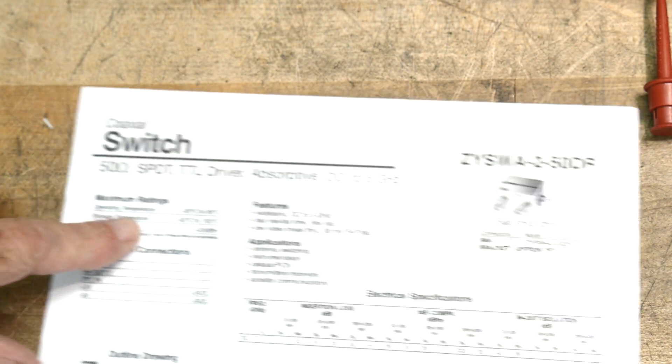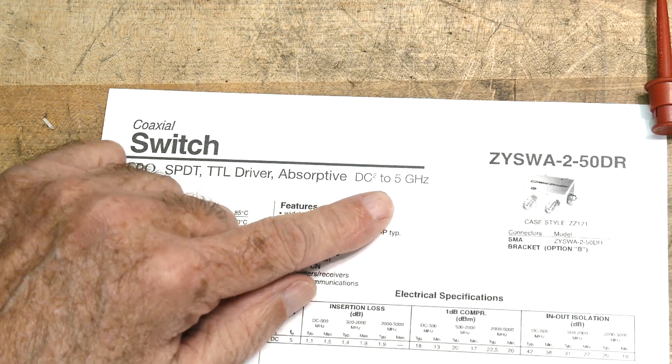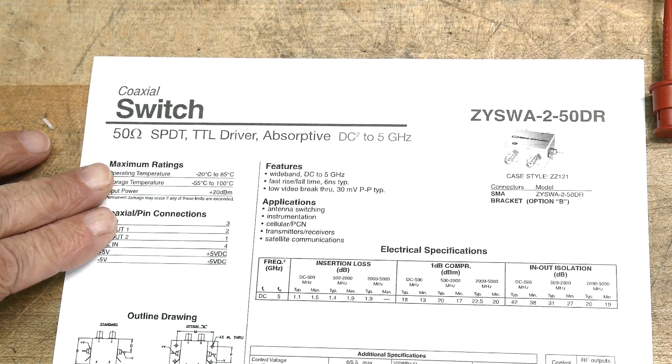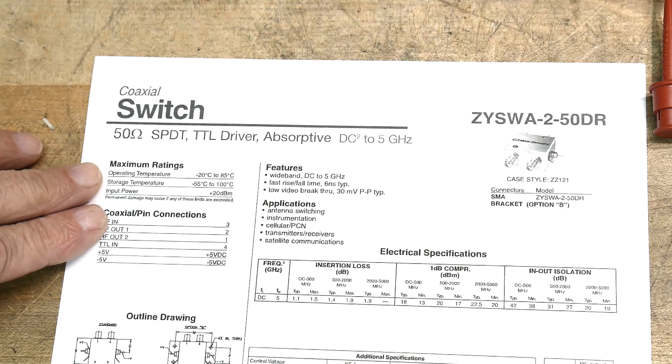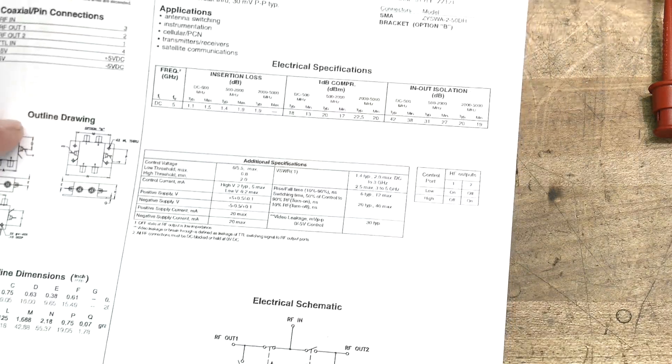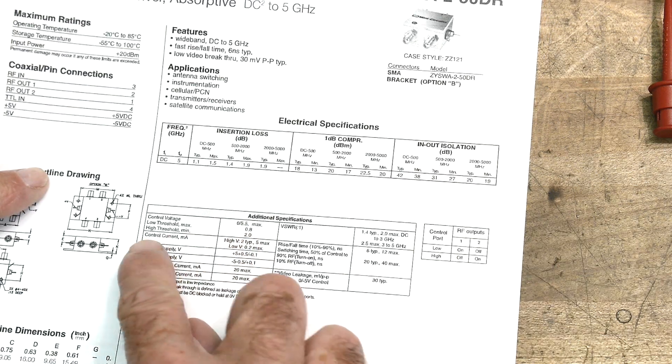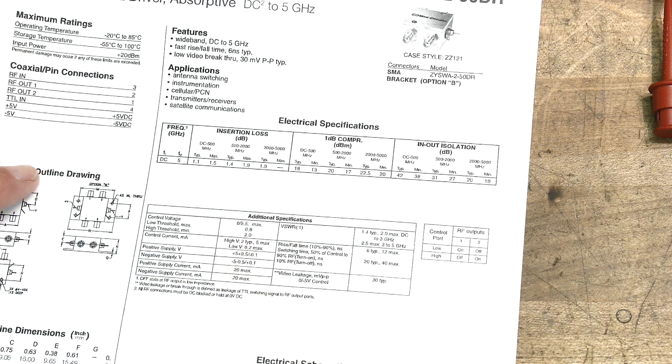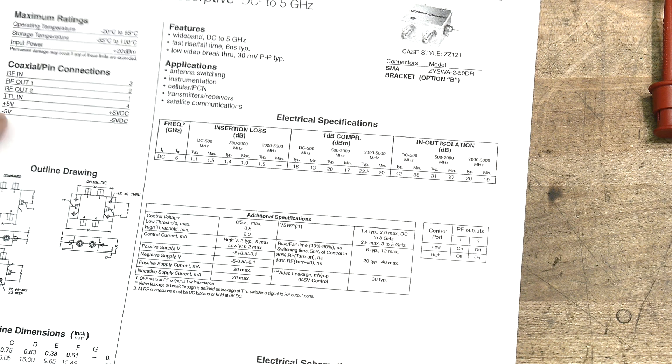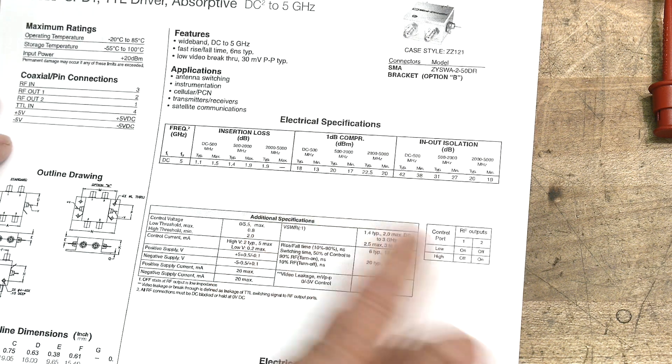Let's take a look at the datasheet first. Mini Circuits, it's good to 5 gigahertz, and single pole double throw. And the cool thing about these that you might want to use this over one of those coax relays is the switching time. Switching times are very fast on this.